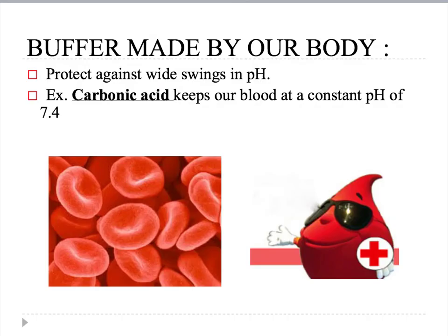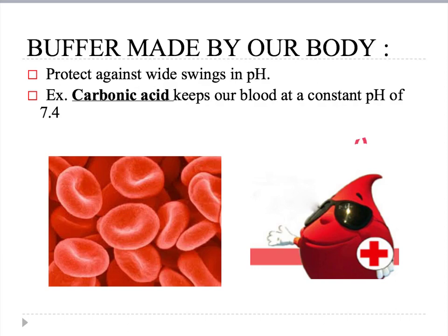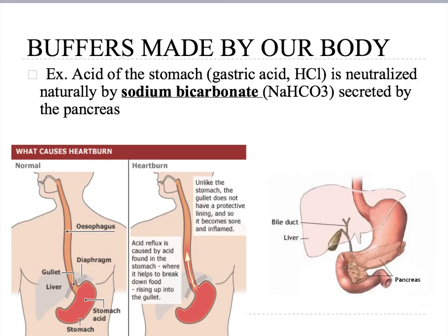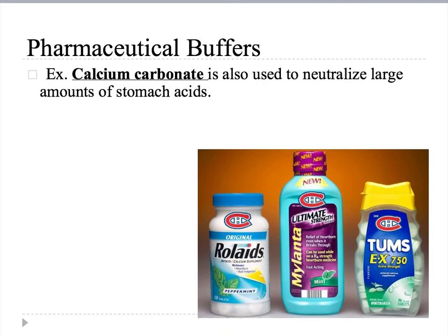Most life forms prefer a neutral pH between 7 and 8. The body produces buffers to maintain this — for example, carbonic acid keeps our blood at a constant pH of 7.4. Another buffer is sodium bicarbonate, secreted by the pancreas, which neutralizes stomach acids before digested food moves into the intestines. Finally, pharmaceutical buffers are sold to consumers to control heartburn and excess stomach acid.